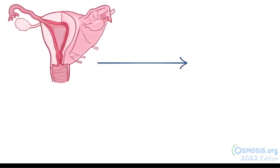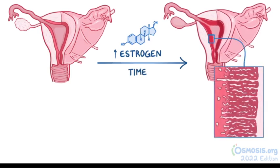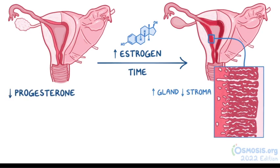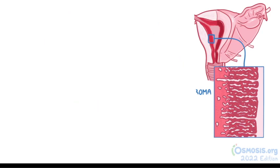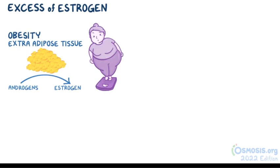Endometrial hyperplasia most often results when the endometrium is exposed to high levels of estrogen for a prolonged time, leading to excessive growth of endometrial glands relative to stroma — a high gland-to-stroma ratio. This is accompanied by low levels of progesterone, which normally opposes estrogen. Excess estrogen can be caused by conditions such as obesity, where extra adipose tissue converts androgens to estrogen.